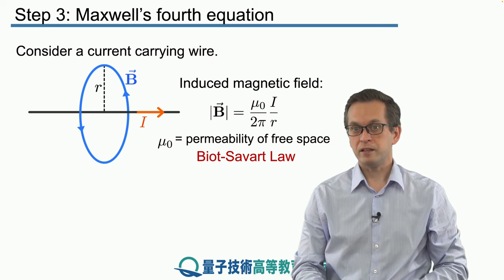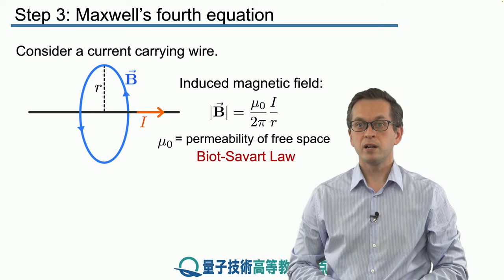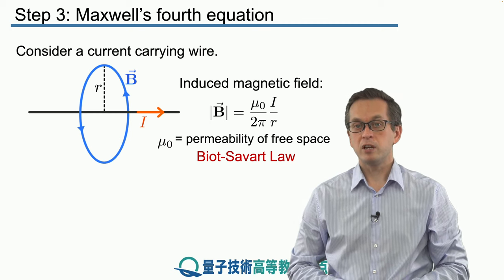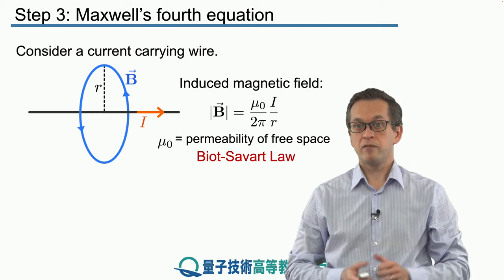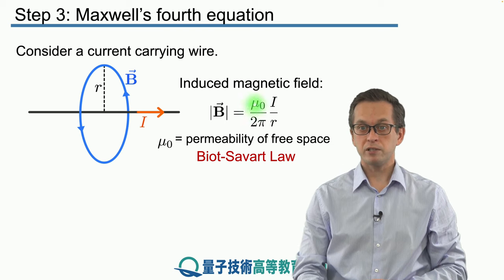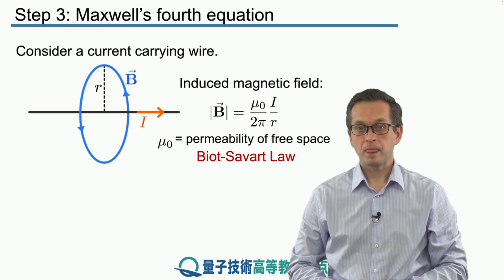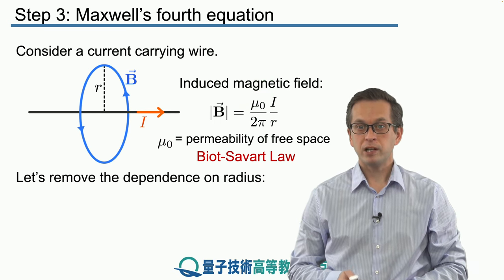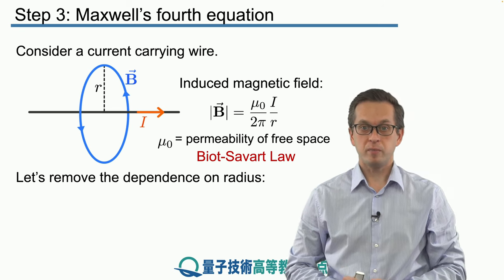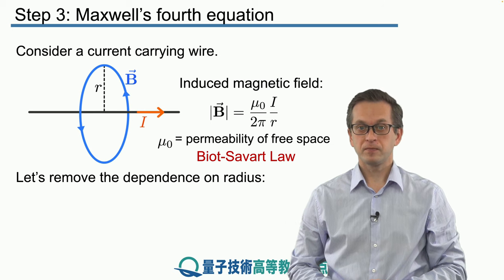It makes sense that if you increase the current — if there are more electrons flowing in your wire — then the magnitude of your magnetic field should also increase. At the same time, if you look at the magnetic field further away from the current-carrying wire, meaning you are increasing r, then this expression decreases. So we would like to have an expression for the magnetic field, but not in terms of r. We would like to get rid of the dependence on the radius.